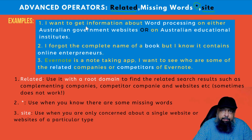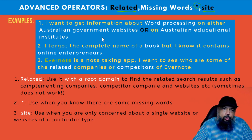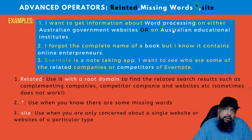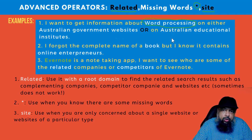These are the example scenarios in which we want to do the search. The first scenario is that I want to get information about the keyword 'word processing', and I want to get this information either from government websites of Australia or from Australian education institutes — any one of these will be fine.